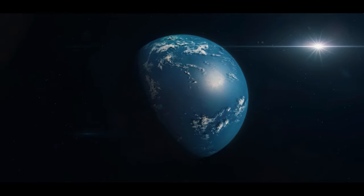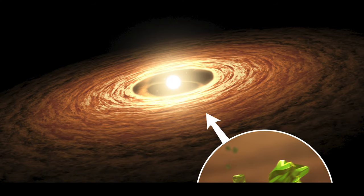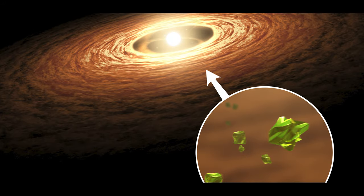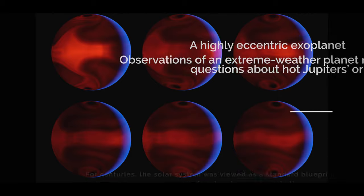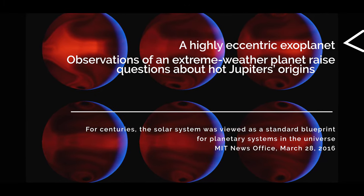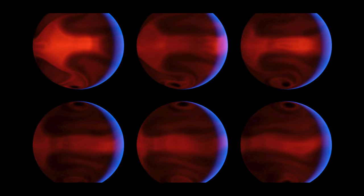Spitzer not only collected valuable data on protoplanetary disks, discovering how silicate crystals from around EX lupi, but also provided data on the heat distribution of planet HD80606b, which lies 190 light-years away toward the constellation Ursa Major.